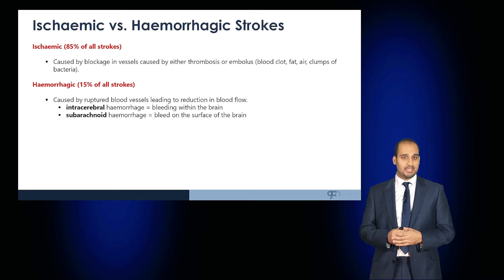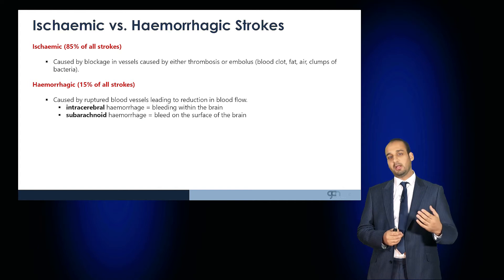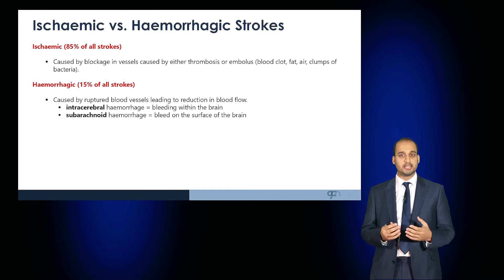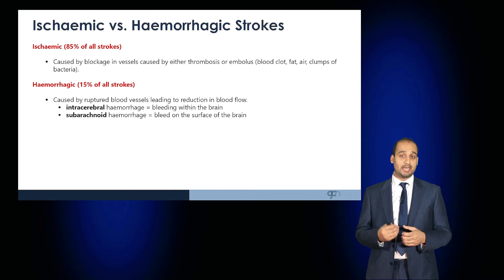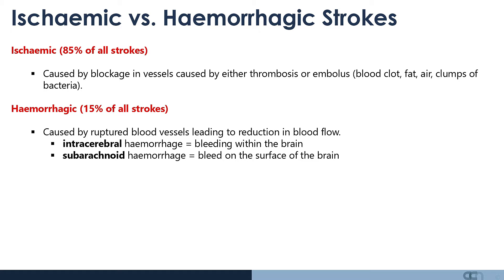Strokes are predominantly ischemic, where 85% are caused by a blockage in the vessels either from thrombosis or an embolus — either a blood clot, fat, air or clumps of bacteria. Hemorrhagic strokes, which account for 15% of strokes, are caused by ruptured blood vessels leading to reduced blood flow, and can result in intracerebral hemorrhage — bleeding within the brain — or subarachnoid hemorrhage — bleeding on the surface of the brain.